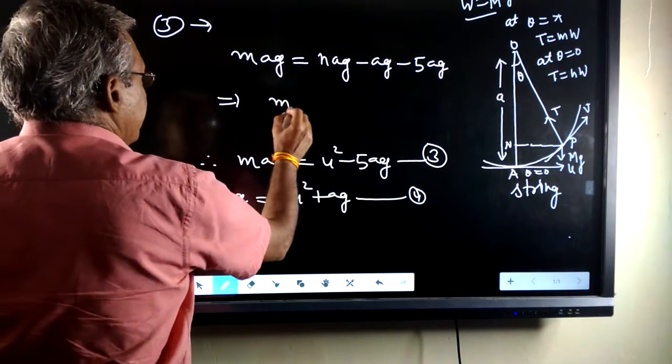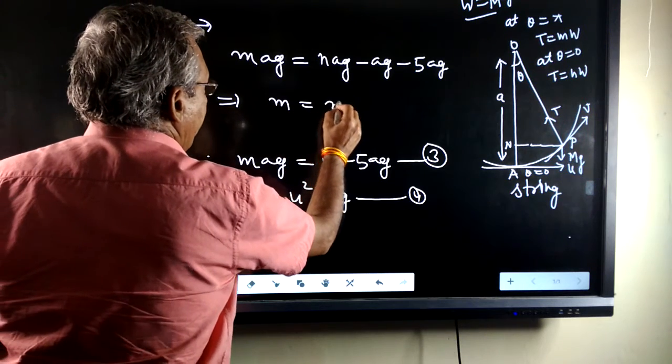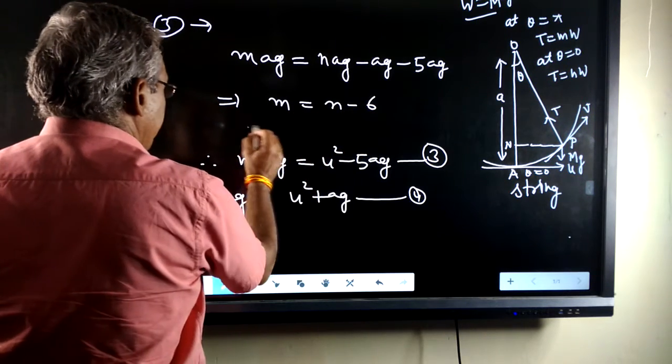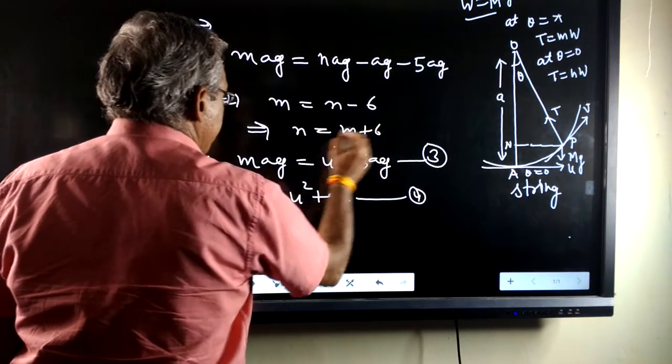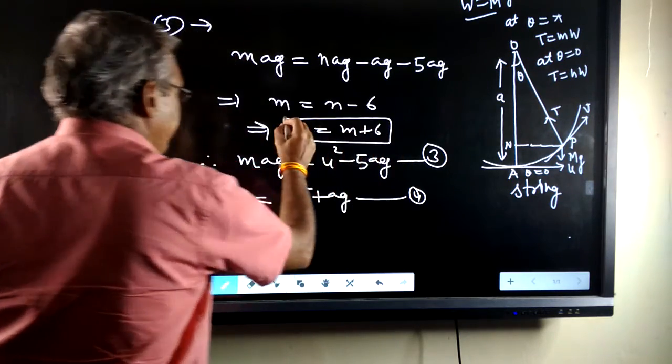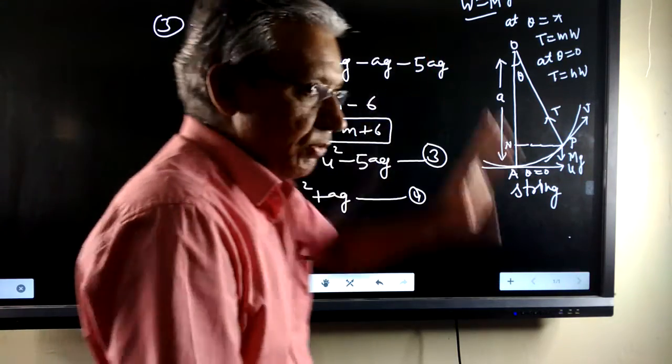ag cancelled out. This is n equals to n minus 6. This can be written as n equals to m plus 6, hence proved.